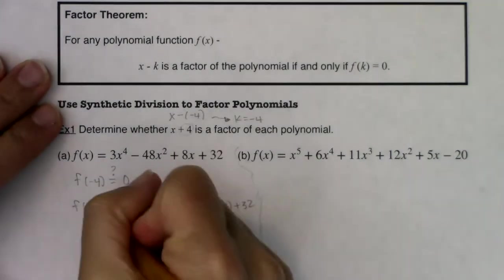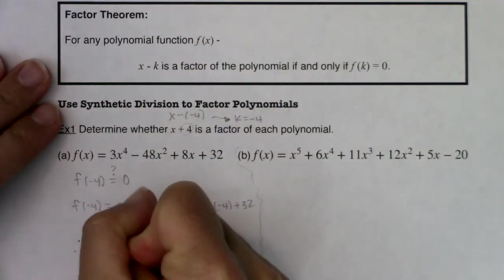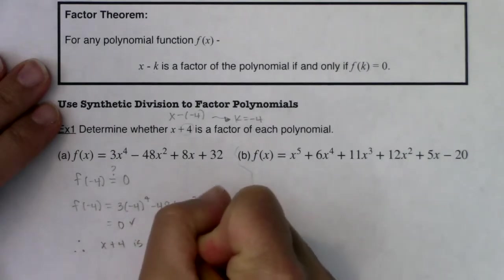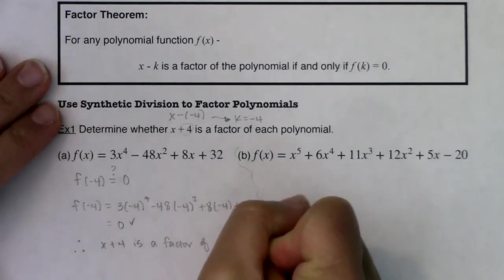Alright, so I get that this is zero. I'll put a little check there. So therefore, x plus 4 is a factor of f of x.